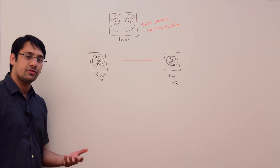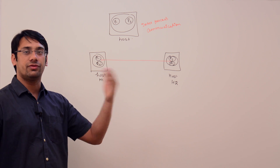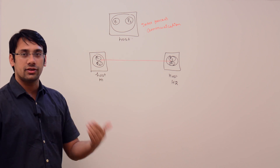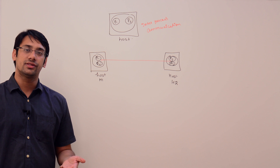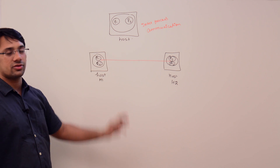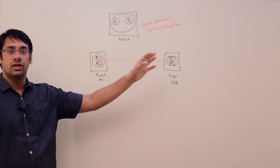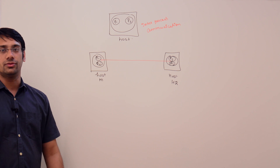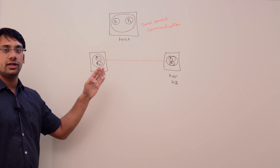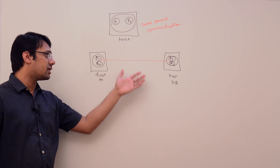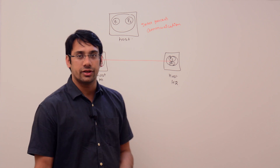The responsibility of computer networks is to ensure that these processes have sufficient resources and permissions, and should not feel that there are two different computers. In a single operating system, the OS provides APIs using which two processes can share data. But here, because they are in two different systems, they should feel like they are communicating within the same operating system. This is the main responsibility of a computer network.